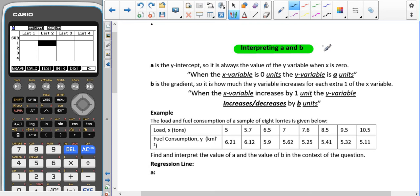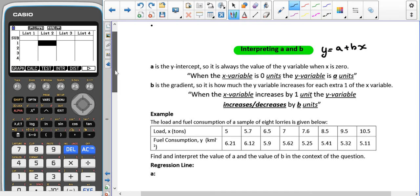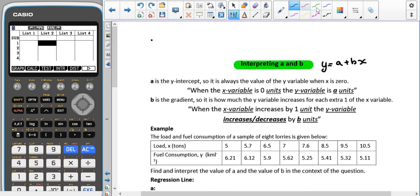Remember that the equation is written in the form y equals a plus bx. And as we've talked about previously in the regressions video, we said that from GCSE, a is like our y-intercept and b is like our gradient.